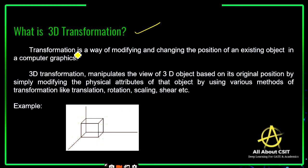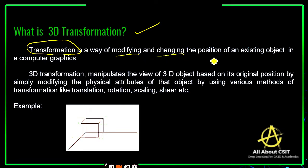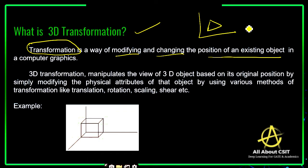Before going to understand 3D transformation, let's have a look at what transformation is. You all know the general meaning of transformation. Transformation is nothing but a way of modifying or changing the position of an existing object in computer graphics. If any object is there on a computer screen and you want to change its position, we use the transformation technique.